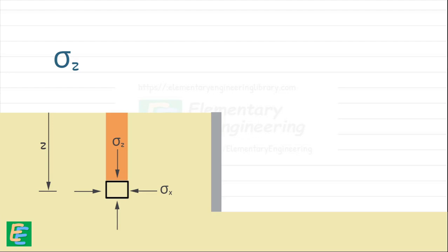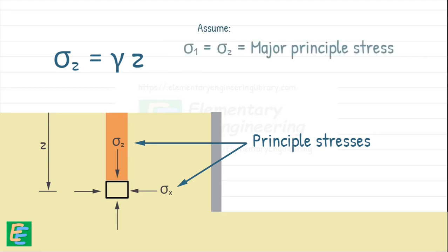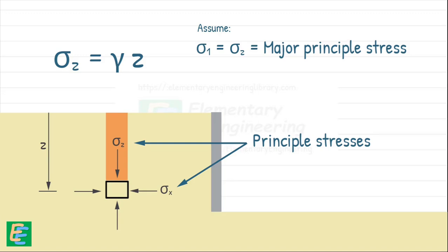The vertical stress sigma z on this soil element is simply due to the weight of the soil above it. And since the weight is just a unit weight of soil, gamma multiplied by depth of it, z. Since no shear stresses act on these horizontal and vertical planes, sigma z and sigma x are the principal stresses. And we initially assume sigma z as the major principal stress, sigma 1 and sigma x as the minor principal stress, sigma 3.